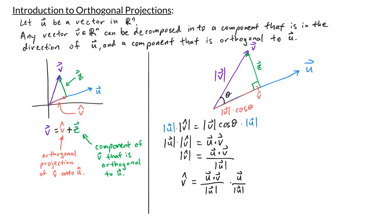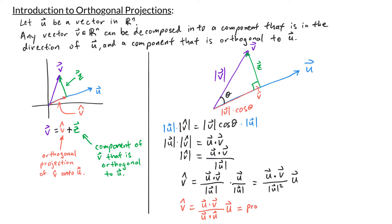To find v-hat, we take this length and multiply by the unit vector pointing in the direction of u, which is u divided by its own length. This simplifies to u dot v divided by the magnitude of u squared, times the vector u. The magnitude of u squared can also be written as u dot u. So v-hat equals (u dot v / u dot u) times u. This is also labeled as the projection of v onto u.